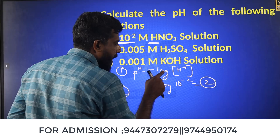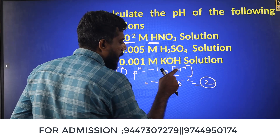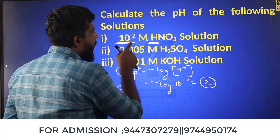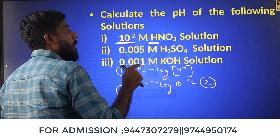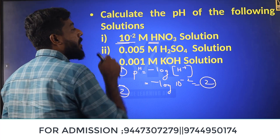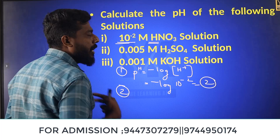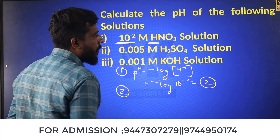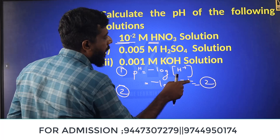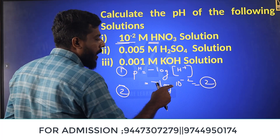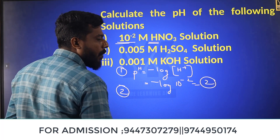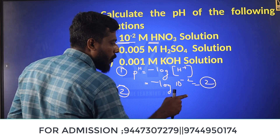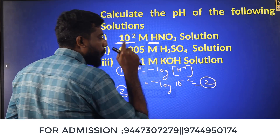The pH equation is: pH equals negative log of H⁺. What is the concentration? Molarity is 10 raised to minus 2. Applying the formula: negative log of 10 raised to minus 2 equals minus times minus 2 equals 2. So pH equals 2.